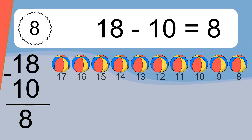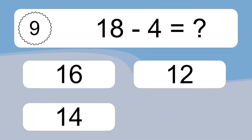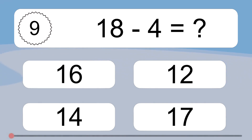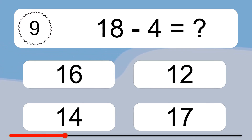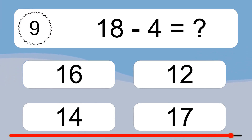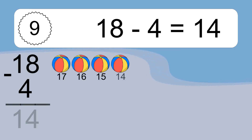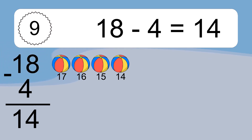18 minus 4 equals what? 18 minus 4 equals 14. Let's count it: 17, 16, 15, 14.